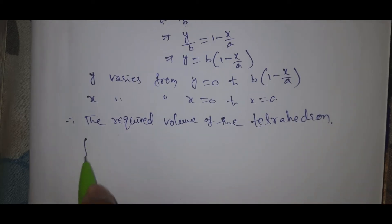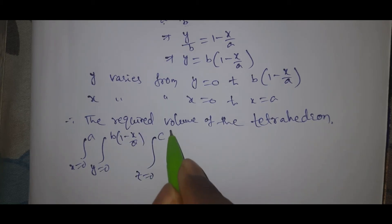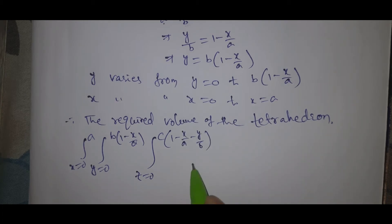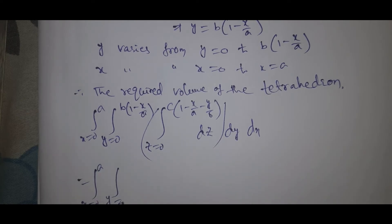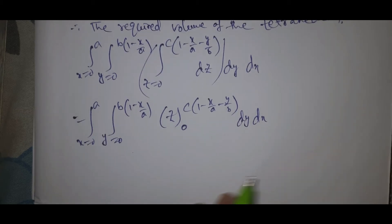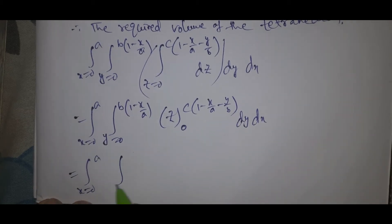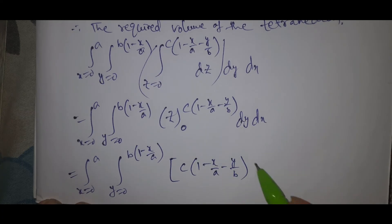Therefore, the required volume of the tetrahedron equals the integral from x = 0 to a, y = 0 to b(1 - x/a), z = 0 to c(1 - x/a - y/b), of dz dy dx.